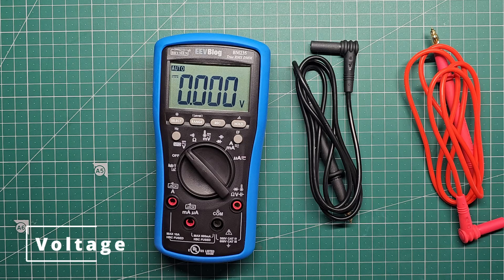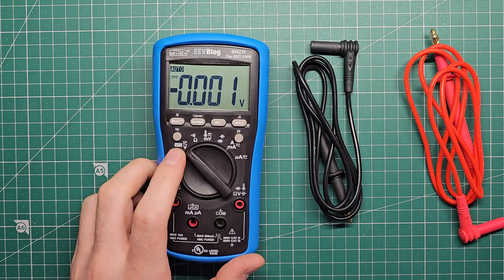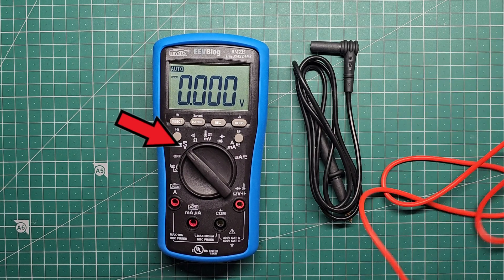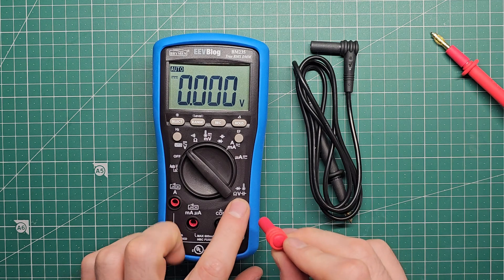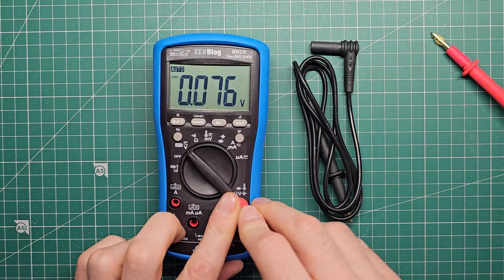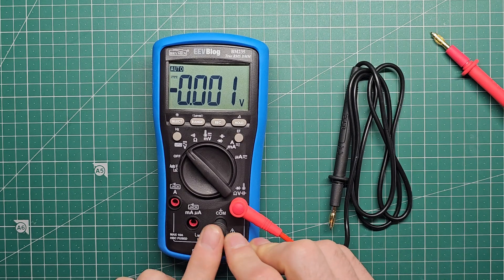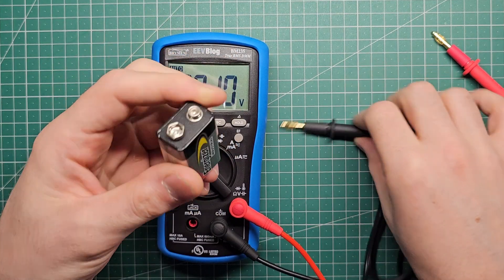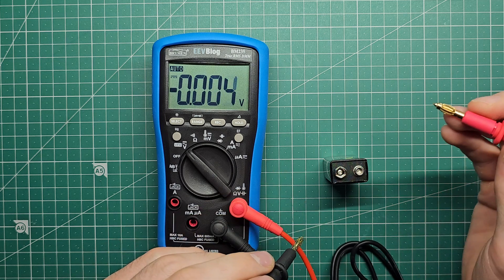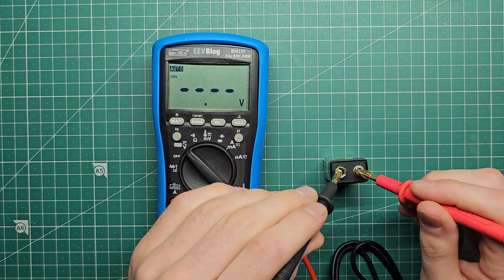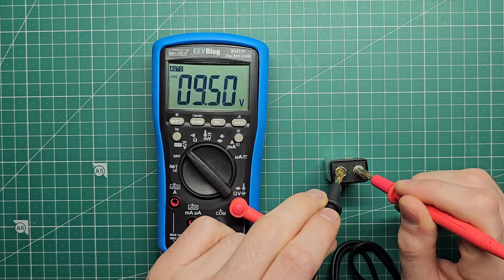First up I'll show you how to measure voltage. In this case I've already turned it to the voltage mode. Now we need to plug our probes in. When we're measuring voltage with these we need to plug it into the voltage port and the common port. And here I have a typical 9 volt battery. If I simply put the red lead to the positive and the black lead to the negative we get 9.5 volts on the multimeter.